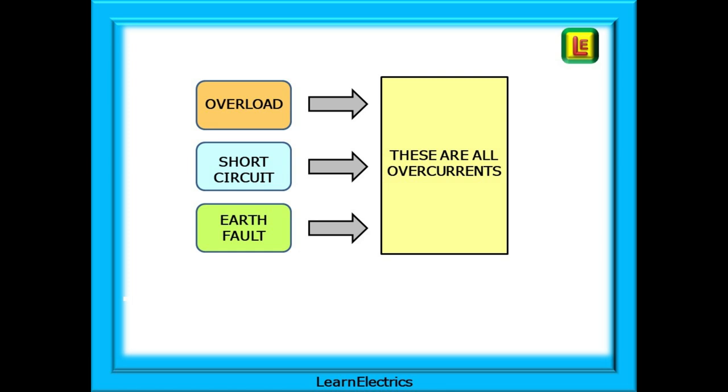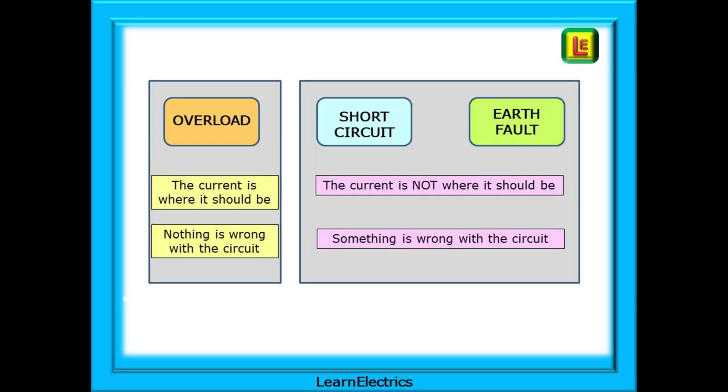All three names are types of overcurrent and all will make the fuse blow or the breaker trip. They just do it differently. Let's begin with overload. With overload there is nothing wrong with the circuit. The electricity, the current, is where it should be. The electrical current is flowing along the correct path through the installation. There is just too much of it.